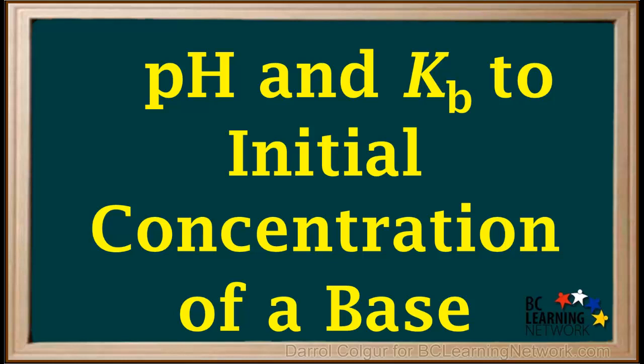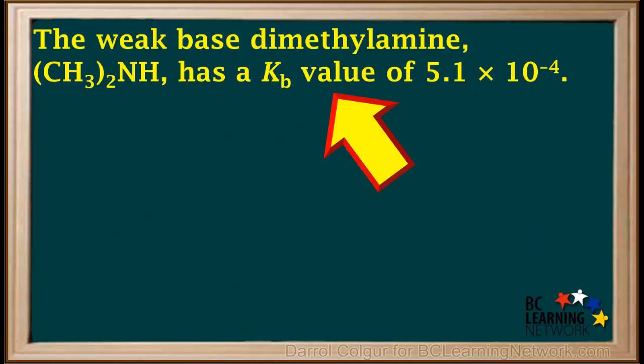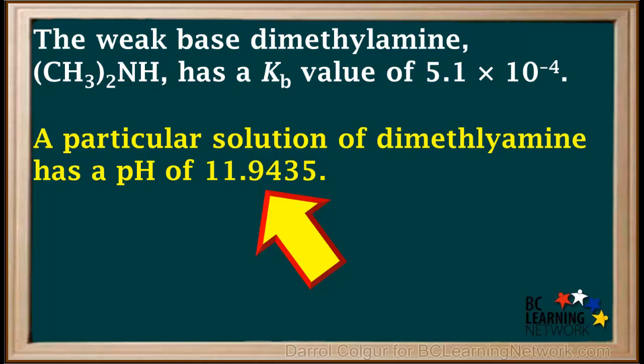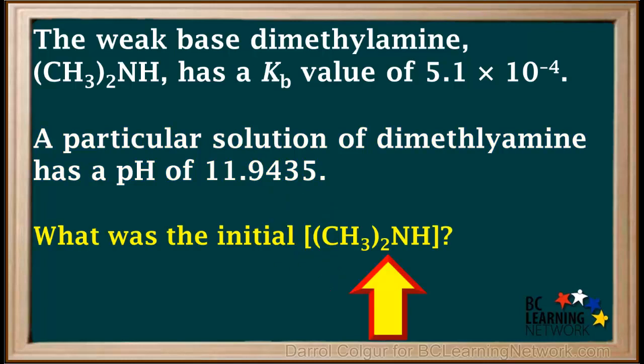Here, we'll show you how to find the initial concentration of a base, given the pH and the Kb of a solution of the base. We're given that the weak base dimethylamine, (CH₃)₂NH, has a Kb value of 5.1 times 10 to the negative fourth. We're told that a particular solution of dimethylamine is found to have a pH of 11.9435, and we're asked to determine the initial concentration of dimethylamine in that solution.